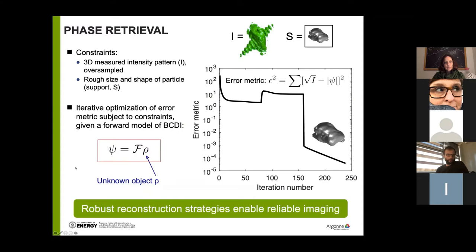There's a whole field here of designing robust reconstruction strategies to enable reliable imaging. The typical challenge is that one doesn't want to get stuck in a local minimum, and there's a whole set of literature about how to hopefully avoid that.